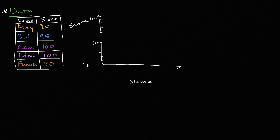And then you could go person by person. So Amy got a 90 on the exam, so the bar will go up to 90. That is Amy. And then you have Bill, who got a 95, so it's going to be between 90 and 100, right over there. That is Bill.